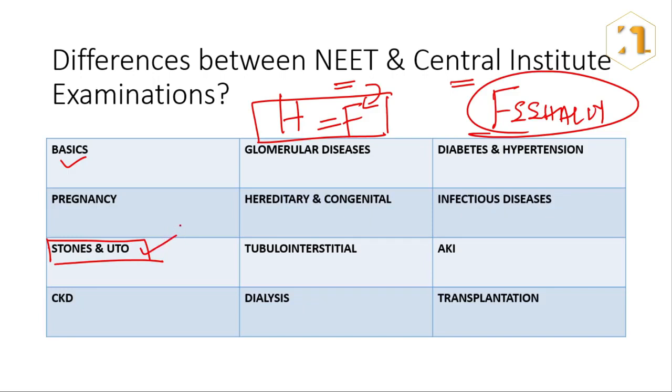So it may be useful, especially for people who have lesser time towards the examination, to focus on such high yield areas. The maximum yield is from glomerular diseases, simply because there are so many glomerular diseases and the scope for asking questions are much more. But otherwise there is no single topic which is more important than the other and you have to pay equal attention to all the topics.